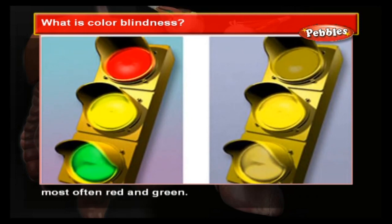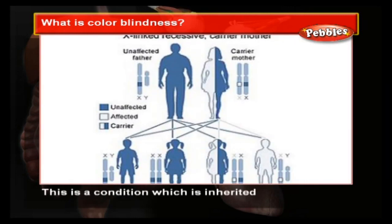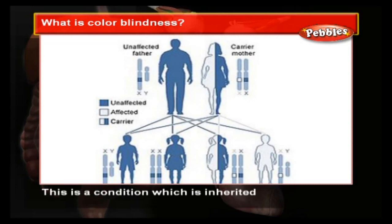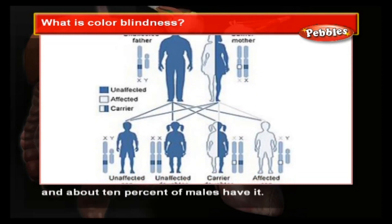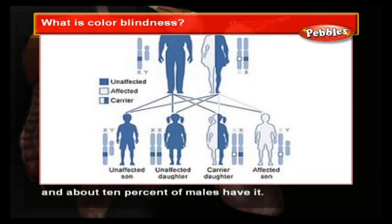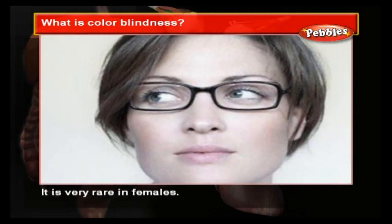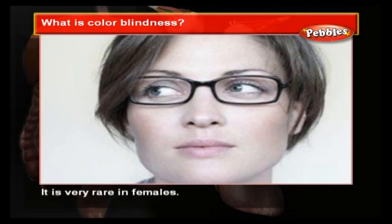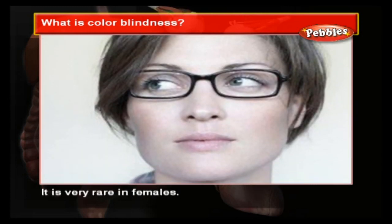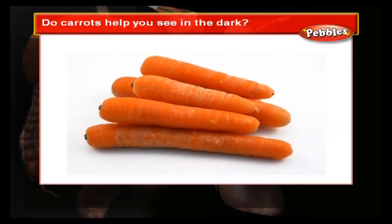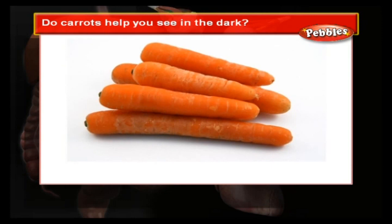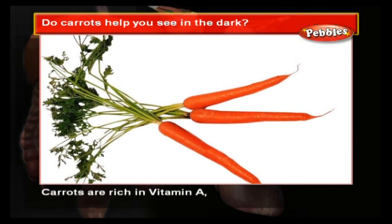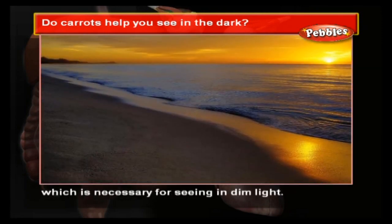Color blindness is a condition which is inherited, and about 10 percent of males have it. It is very rare in females. Do carrots help you see in the dark? Carrots are rich in vitamin A, which is necessary for seeing in dim light.